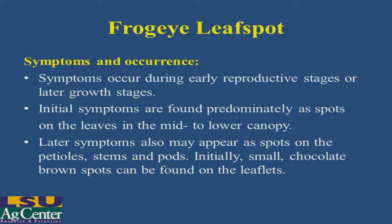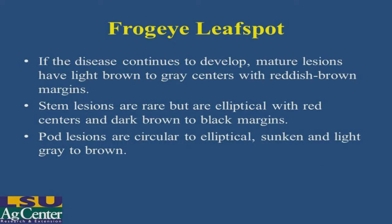Later symptoms also appear as spots, sometimes even larger, on petiole stems and pods. Initially, we have the small chocolate brown spots that can be found on the leaflets. If the disease continues to develop, the mature lesions are lighter and brown or have gray centers with reddish-brown margins.